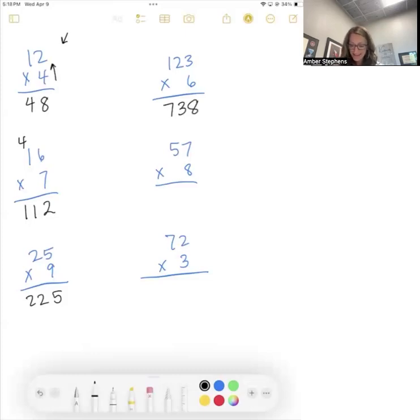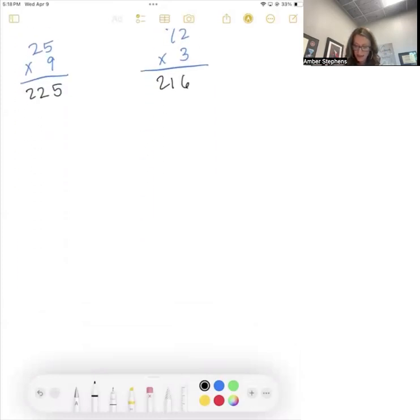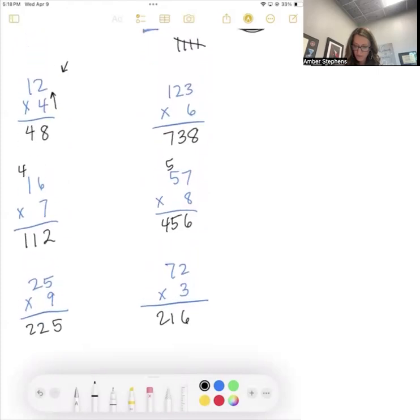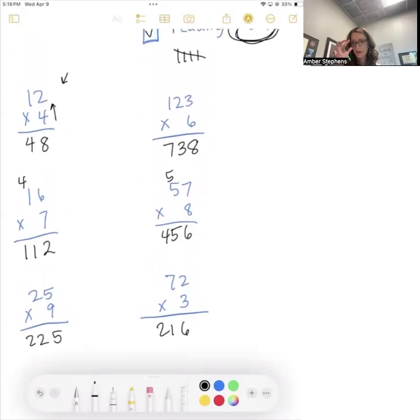57 times eight. 56, eight times five, 40 plus the five, 456. This one is nice. There's no carries on this one. This one is easier to do left to right, 21 and then six. And then down here we have, that is all we have. I thought we had some more three digits, but that was all.